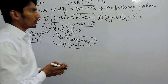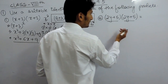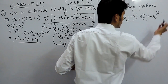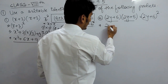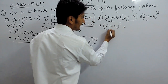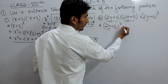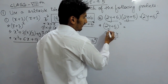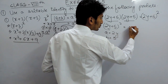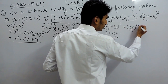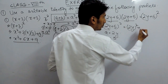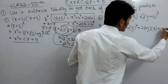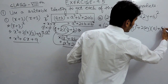Similarly for the second part, these two terms are also the same. So this can be written as (2y + 5) whole square. This is (a + b) whole square where a equals 2y and b equals 5. Applying the formula, we get a square which is (2y) square, plus 2 into a which is 2y, into b which is 5, plus b square which is 5 square.